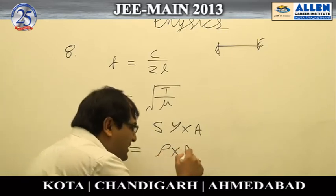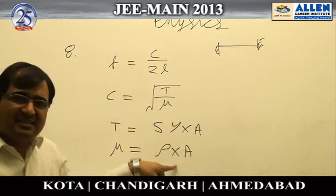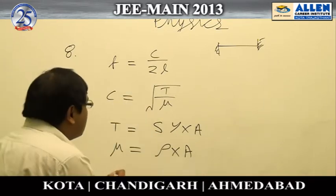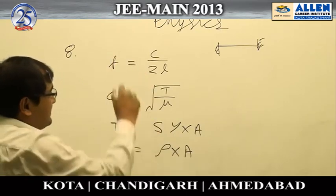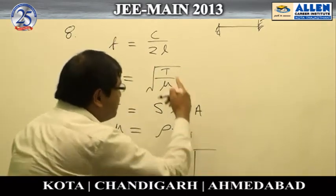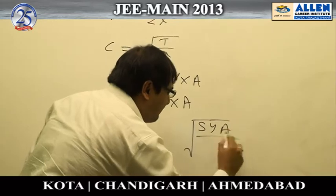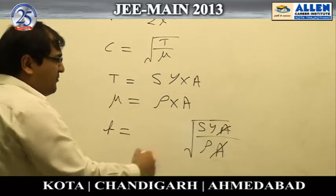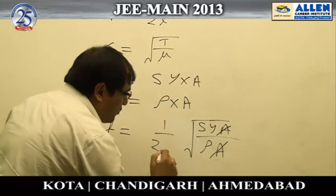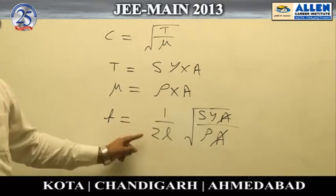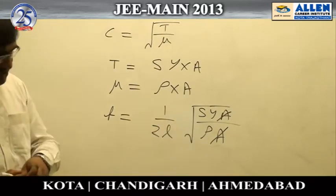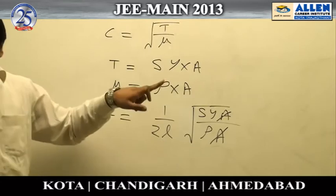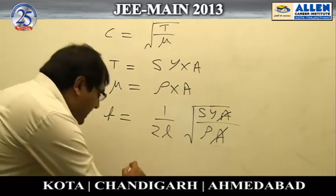Substituting into the frequency formula, we get √(S/ρ) × (1/2L), where the cross-sectional area cancels out. All the required data — strain, Young's modulus, density, and length — are given in the question. Putting in all the values gives option number two as the answer.